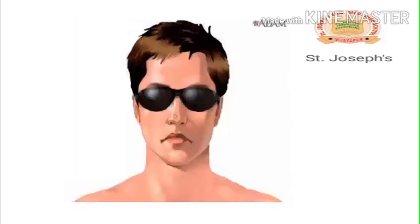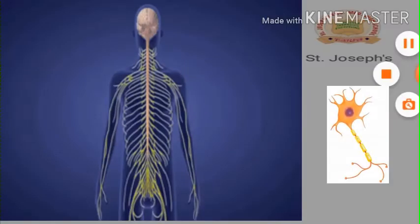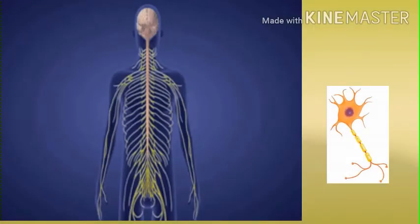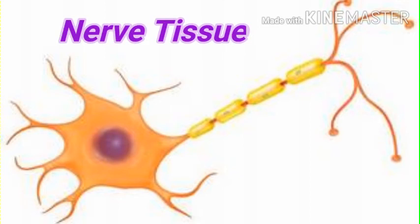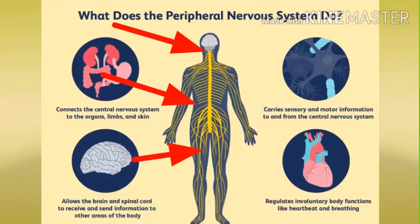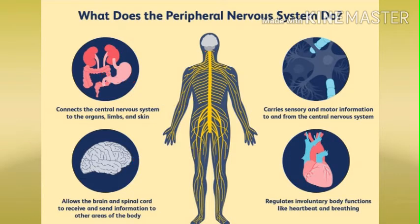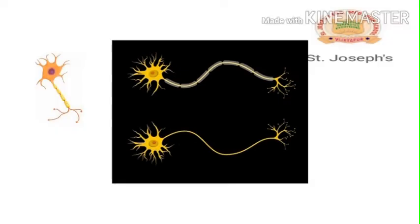The central nervous system communicates with every part of the body through an extensive network of nerves. The nerves and the central nervous system are both constructed from billions of nerve cells called neurons. Nerve tissues are found in the brain, spinal cord, and the peripheral system.